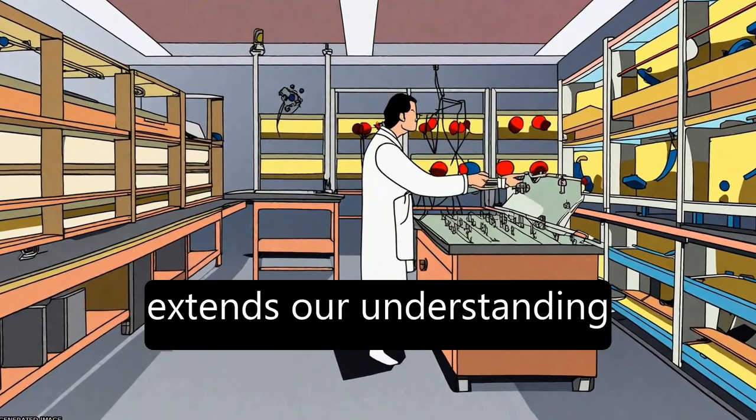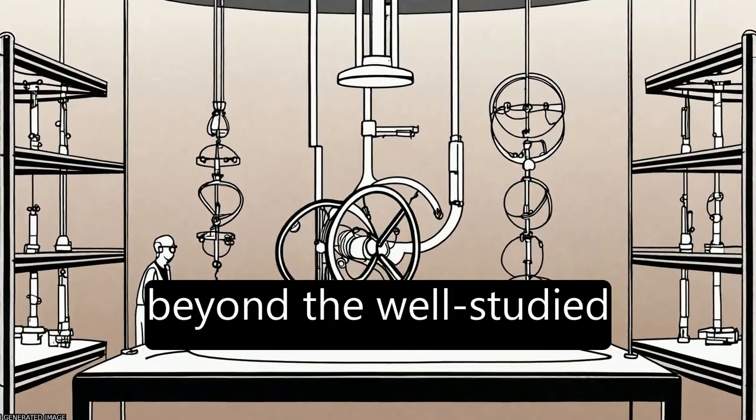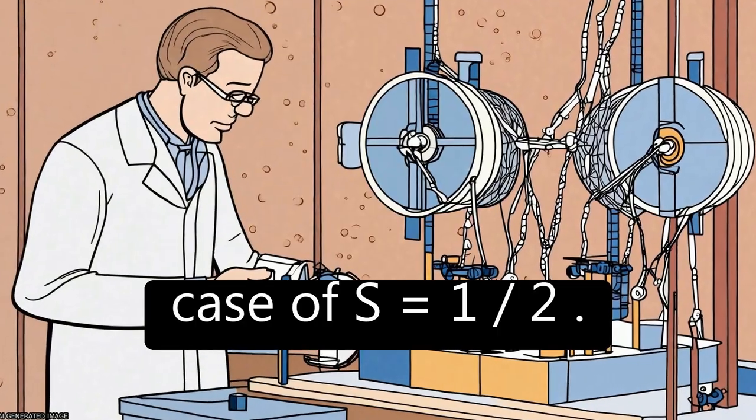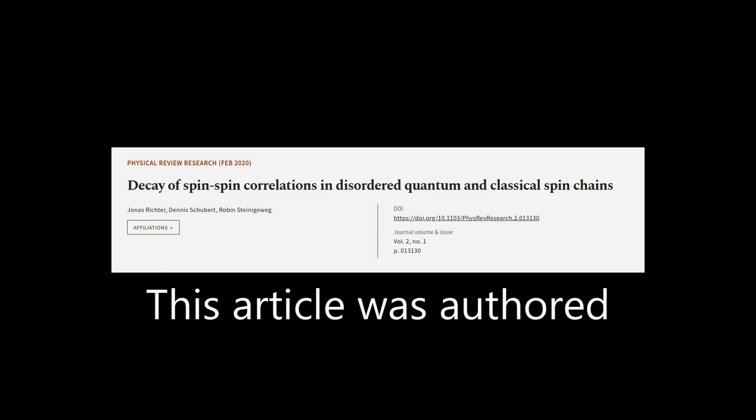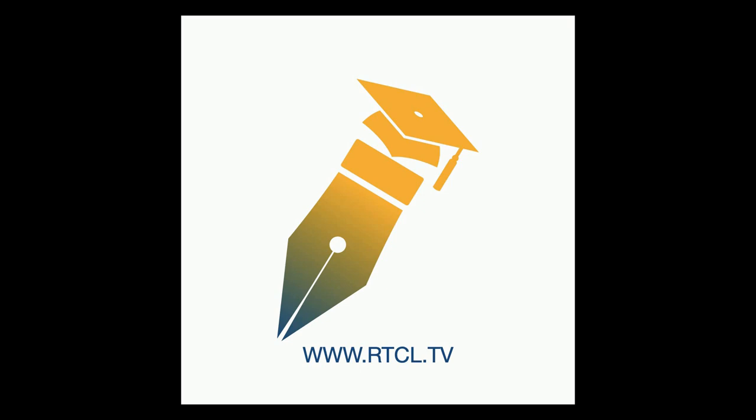Overall, the study extends our understanding of the dynamics in disordered spin chains beyond the well-studied case of S equals 1/2. This article was authored by Jonas Richter, Dennis Schubert, and Robin Steinigeweg. We are article.tv, links in the description below.